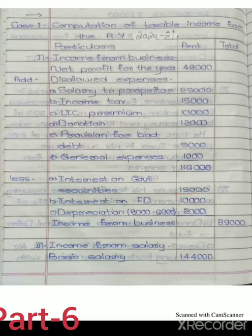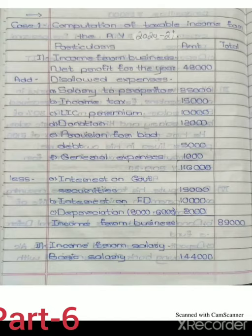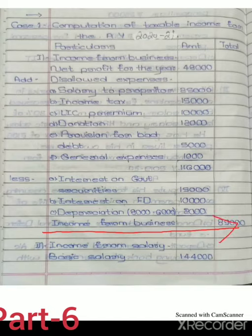Then we deduct some items: income from other sources and exempted incomes. Interest on government security, 15,000, is deductible because it is taxable under the head of other sources, not under business. Interest on FD is also deductible. Depreciation — the excess or shortfall in depreciation is also deductible. After deducting all these, the final income from business is 89,000.